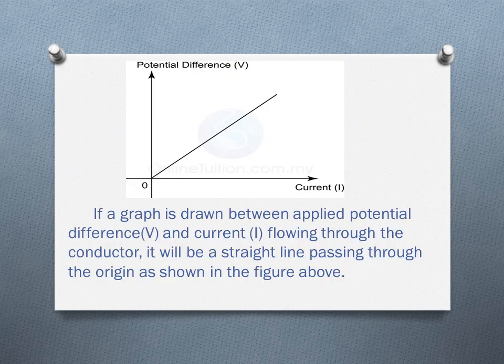In this figure, if a graph is drawn between applied potential difference V and current I flowing through the conductor, it will be a straight line passing through the origin, as shown in the figure above. The slope of the graph gives the resistance of conductor, that is, tan θ equals V by I, which is equal to R. Those conductors like metals which obey Ohm's law are called Ohmic conductors. Ohm's law is true only for Ohmic conductors.